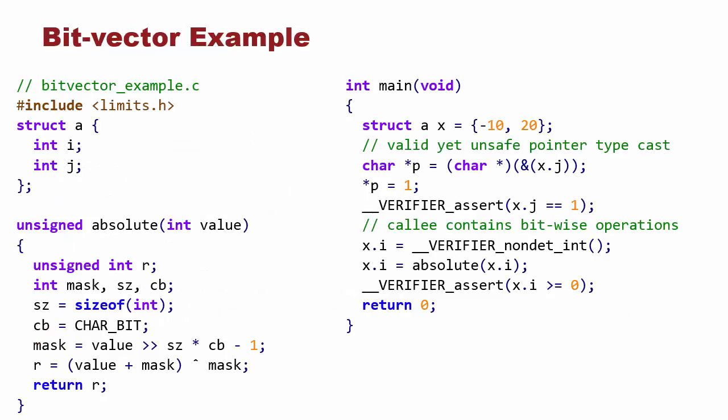Let's take a look at a couple of examples. One recently added feature to SMAC's support for LLVM-IR is its bitvector support, which allows for analysis of bitwise operations and unsafe typecasts. In this example, we initialize struct x with negative 10 and 20. The address of its j member is then cast as a char pointer, and a value of 1 is stored at this memory location. By calling verifier assert, we can verify that the low byte of x.j is indeed changed from 20 to 1.